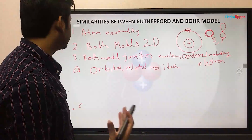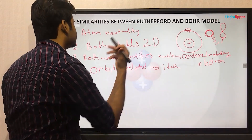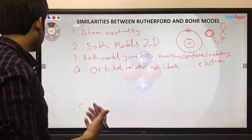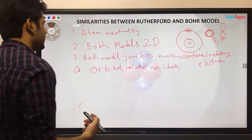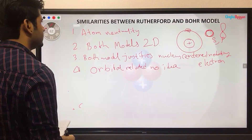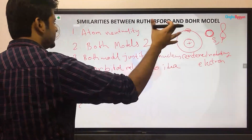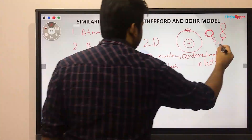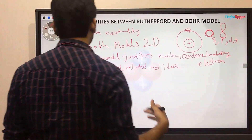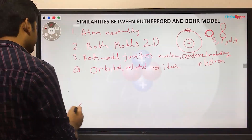This is a 3-dimensional model, whereas the earlier model is 2D, so there is no chance for 3D in that model. The other similarity is this orbital-related concept — this is the S-P-D-F classification. However, this orbital classification is not the idea of an orbital in the older model.